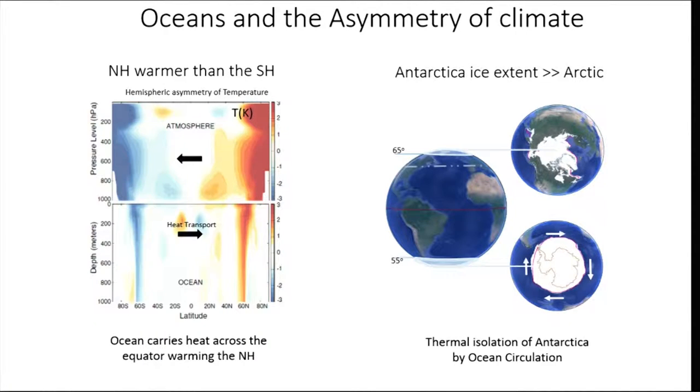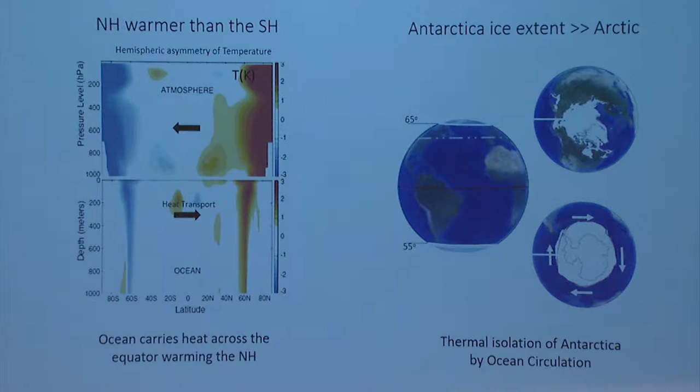Another big asymmetry of climate is that there's much more ice over Antarctica than over the Arctic. There are two miles of ice around Antarctica, whereas the Arctic ice is much less extensive and might be quite vulnerable as climate changes. I don't think we should worry about Antarctica losing all its ice — it's not going to happen any time soon. Big chunks might break off, but it will be there. One of the roles the ocean plays is that it thermally isolates Antarctica from the rest of the climate system because there's a circumpolar current moving through Drake Passage, enabling ice to build up.